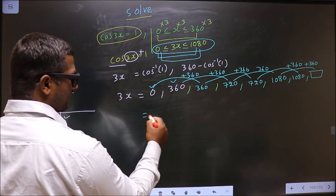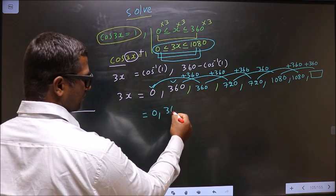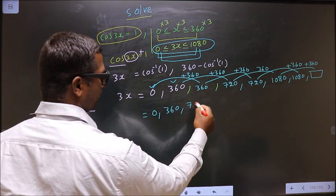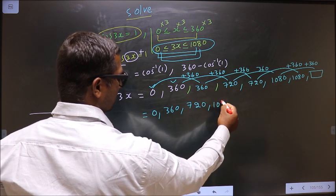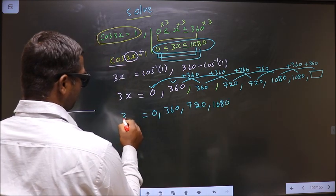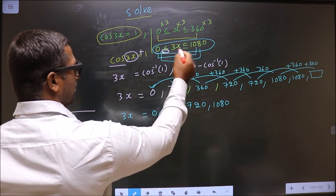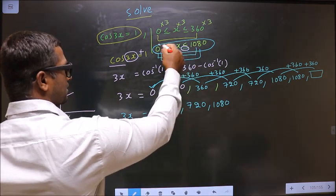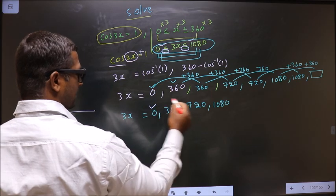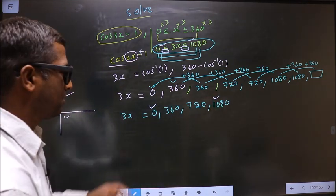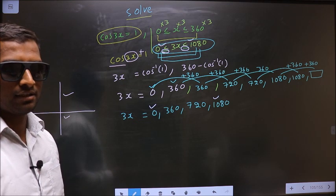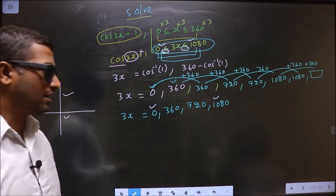We got the angles to be 0, 360, 720, 1080. See here you have equal to symbols. That means 0 and 1080 can be included. So we have included. Clear?